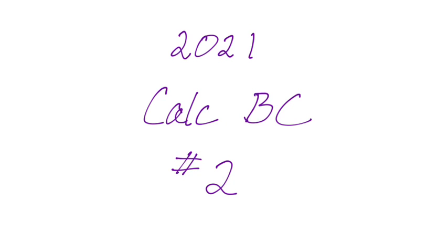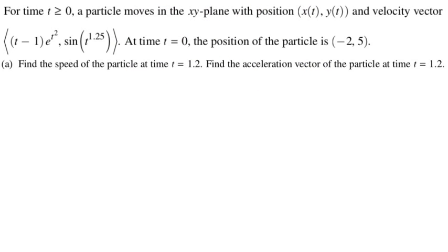All right, in this video we're going to talk about number two from the 2021 Calc BC exam, and it's a parametric type problem. So for time t greater than or equal to zero, a particle moves in the xy plane with position x of t, y of t, and velocity vector.